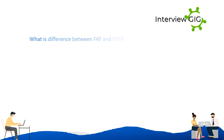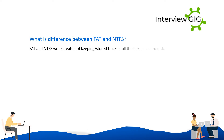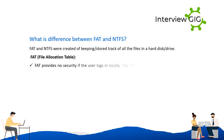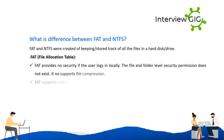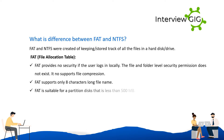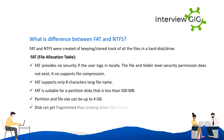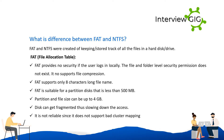What is the difference between FAT and NTFS? Both were created for keeping stored track of all files in a hard disk drive. FAT (File Allocation Table) provides no security — if the user logs in locally, file and folder level security permissions do not exist. FAT does not support file compression, supports only 8-character long file names, is suitable for partition disks less than 500 megabytes, and supports partition and file sizes up to 4 gigabytes. Disks can get fragmented, slowing down access.